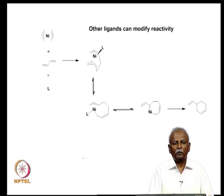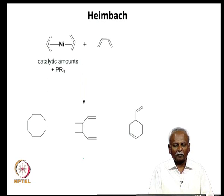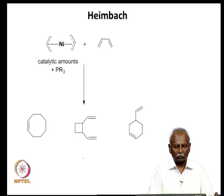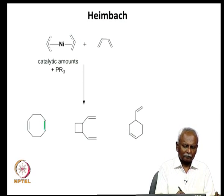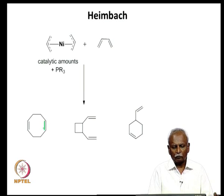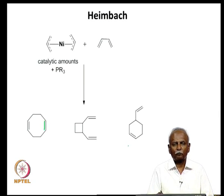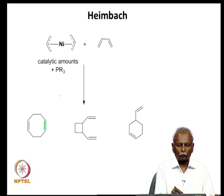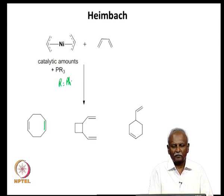The reactivity was slowed down in the presence of phosphines. When PPh₃ was used, it was possible to isolate different amounts of cyclooctadiene, 1,4-divinylcyclobutane, and vinylcyclohexene. All three products were formed in the presence of PPh₃, where R is a phenyl group.